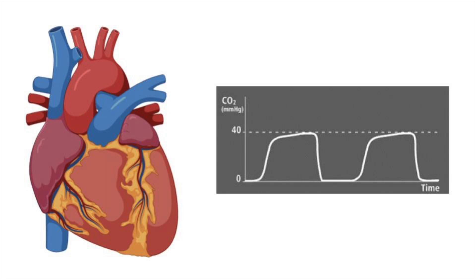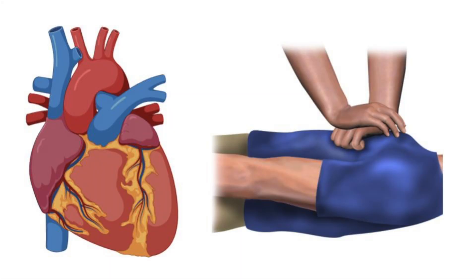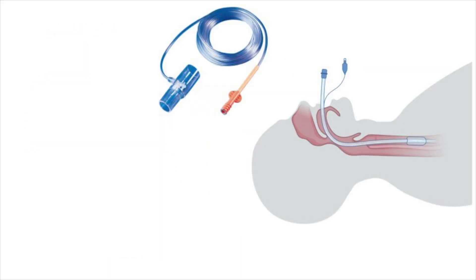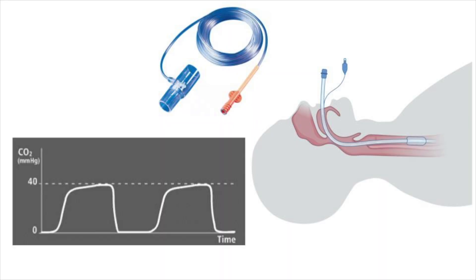There are a number of places where continuous waveform end-tidal CO2 can be really helpful in resuscitation and cardiac arrest. Let's start with the C component of CAB, the circulation. Often when we are providing compressions, it can be difficult to assess the efficacy of those compressions. End-tidal CO2 can help us there. So we put the end-tidal CO2 on the ET tube or on the supraglottic device, whatever we're using to oxygenate the patient, and we look at that waveform while we're doing compressions.